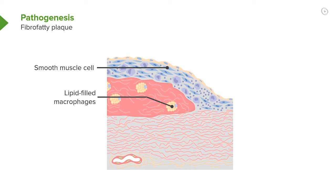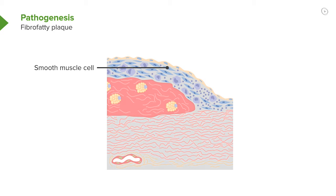You can see that there's a fibrous cap overlying this. When the fibrous cap is thick, the lumen or channel of the artery gets smaller but it doesn't rupture. When the fibrous cap on top is very thin, it can rupture, a blood clot can form, and the artery can actually occlude totally, resulting in infarction or necrosis — death of tissue downstream.